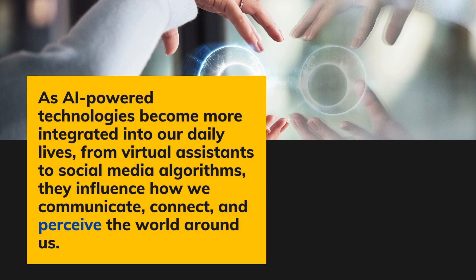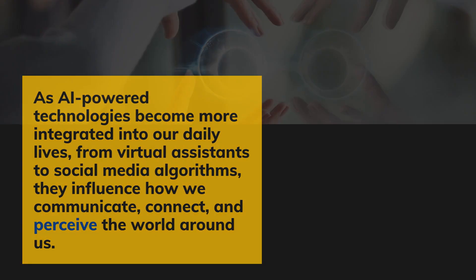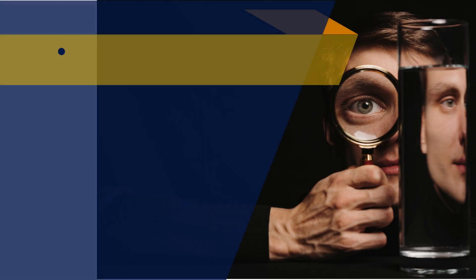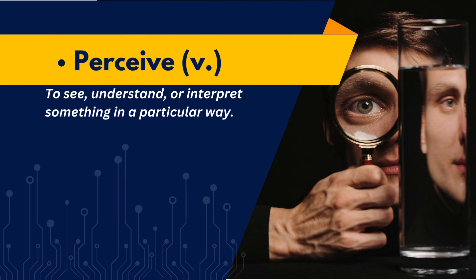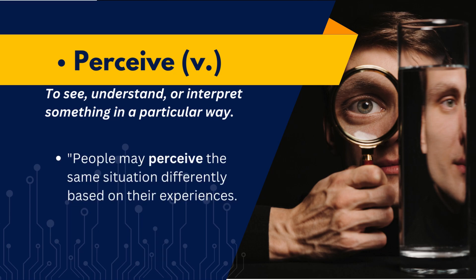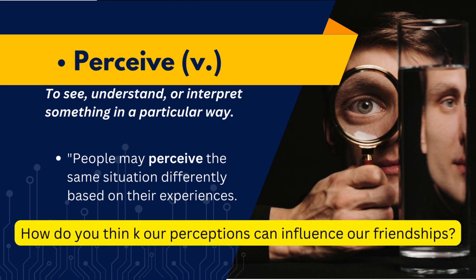As AI-powered technologies become more integrated into our daily lives, they influence how we communicate, connect, and perceive the world around us. When we perceive something, we see, understand, or interpret it in a particular way. People may perceive the same situation differently based on their experiences. How do you think our perceptions can influence our friendships?